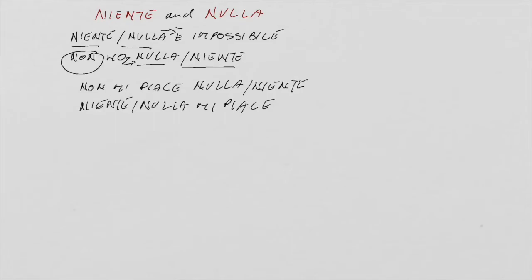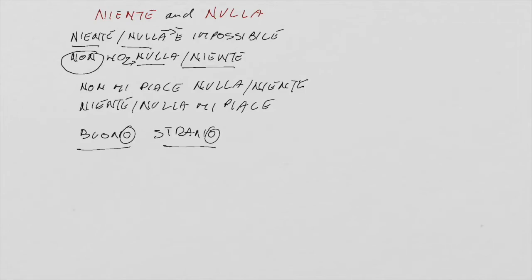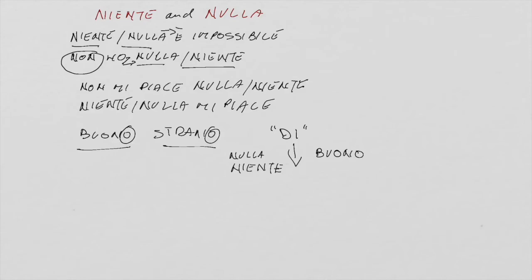Niente and nulla are invariable — they don't change their form. When they combine with an adjective, for example buono (good) or strano (strange), the adjective keeps its singular masculine form, and the preposition di must be placed between nulla or niente and the adjective. So for 'nothing good,' you use niente or nulla, then di, then buono — always keeping the form buono.